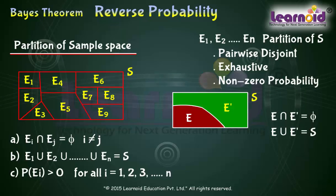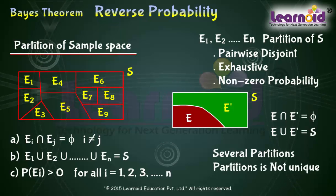This is one partitioning of sample space. There can be several partitions of the sample space. It means partition of a sample space is not unique.